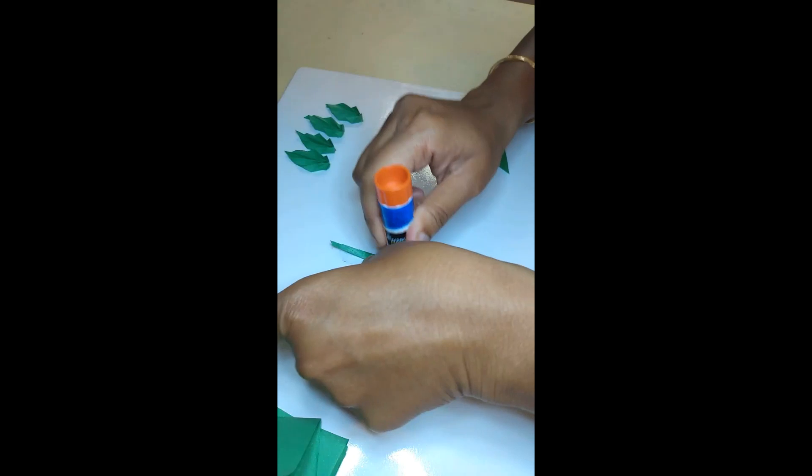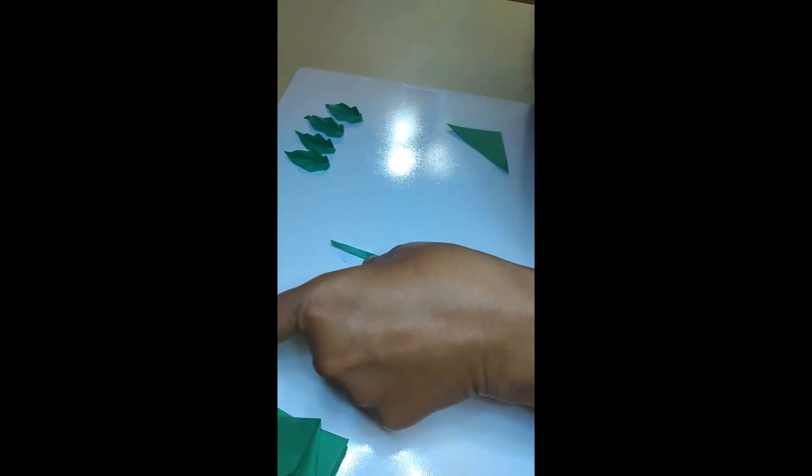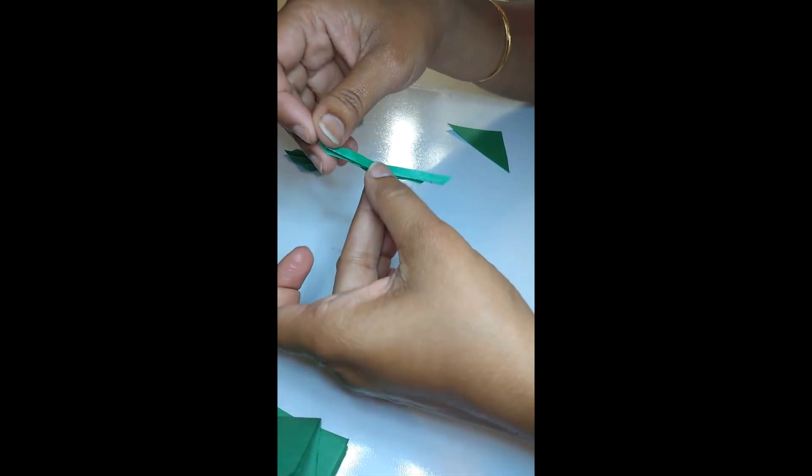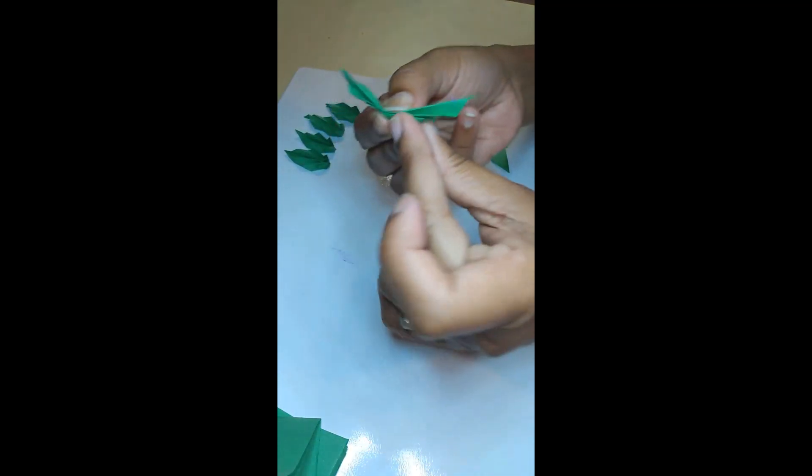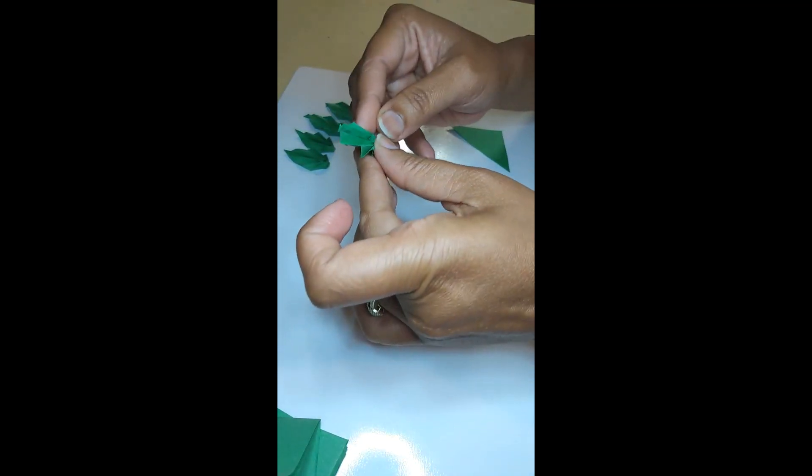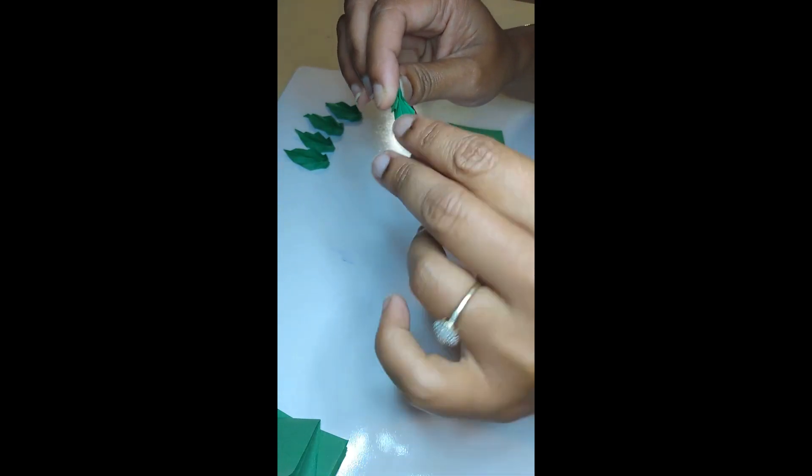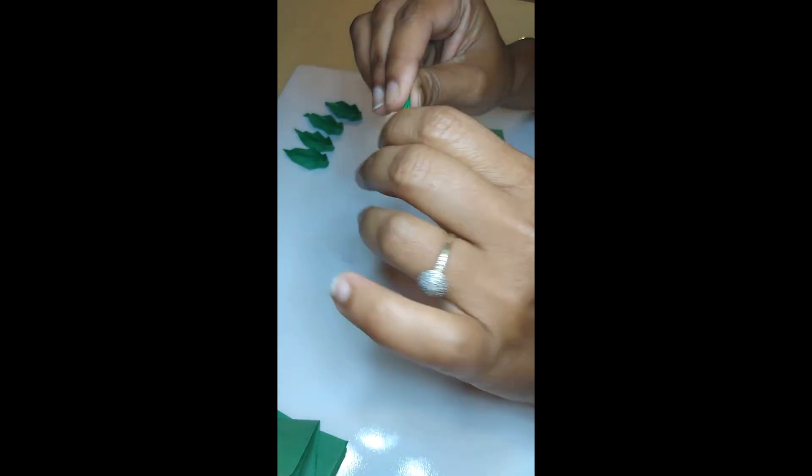After you are done folding, add the glue on the edges, then fold it like this and attach it. Now spread it. Now your green leaf is ready.